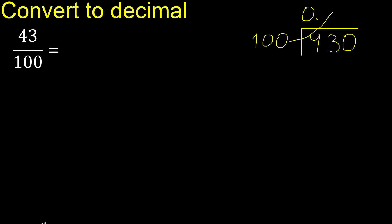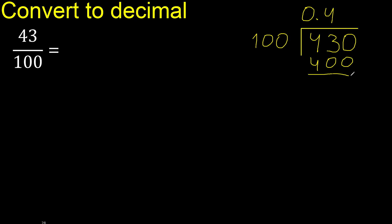100 multiplied by which number is nearest to 430 but not greater? Multiply by 5 is 500 — is greater. Multiply by 4 is 400 — ok. Subtract, is 30. There is no number that goes down, therefore complete — always complete with 0. Point is here. 100...